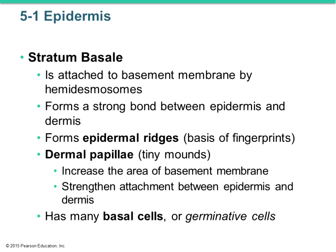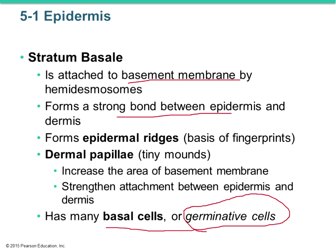Starting at the basement membrane and working up to the free surface: the first layer is the stratum basale, attached to the basement membrane. It has a strong bond between epidermis and dermis. This is where we find basal cells, or germinative cells, or stem cells — cube-shaped cells that divide and remain at the basement membrane, continually pushing daughter cells up toward the free surface.